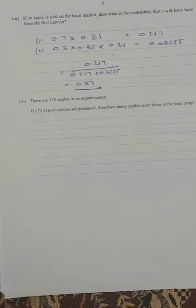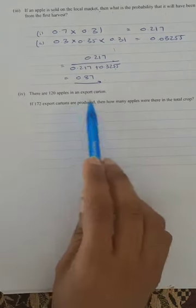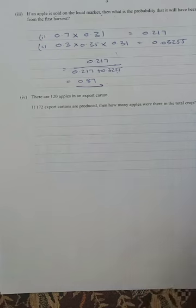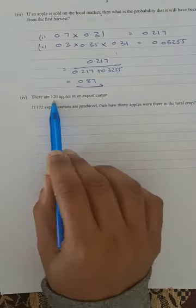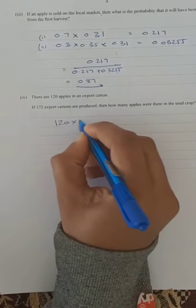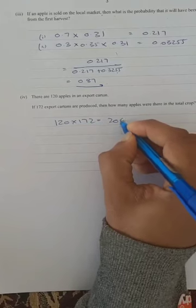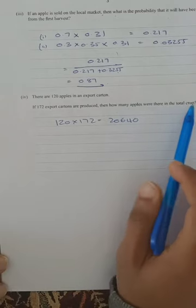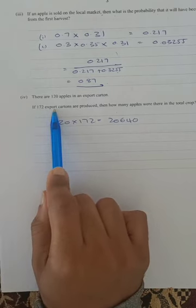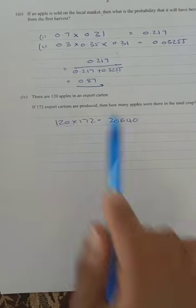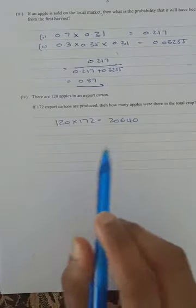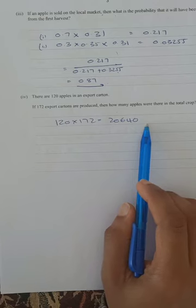Question four: there are 120 apples in an export carton. If 172 cartons are produced, then 120 × 172 = 20,640 apples were exported. We need to find the probability of an apple being picked and exported via either trail — first finding the probability of being picked and exported.